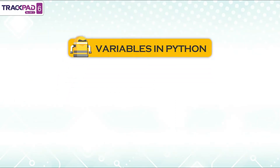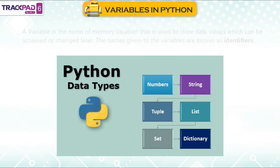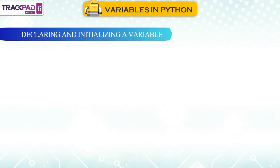Variables in Python: A variable is the name of a memory location used to store data values, which can be accessed or changed later. The names given to variables are known as identifiers. In Python, we do not need to specify the type of variable because Python is a dynamic language that identifies the variable type automatically.